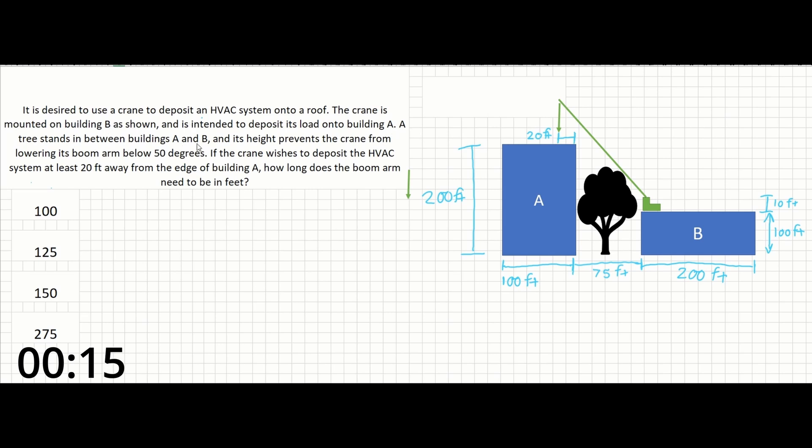A tree stands in between buildings A and B, and its height prevents the crane from lowering its boom arm below 50 degrees. If the crane wishes to deposit the HVAC system at least 20 feet away from the edge of building A's roof, how long does the boom arm need to be in feet?